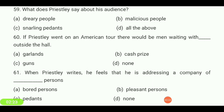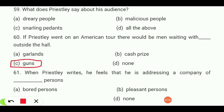If Priestley went on an American tour, there would be men waiting outside the hall with — garland, cash prize, guns, or none? Your answer is 'guns.'